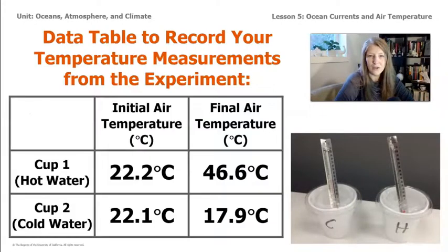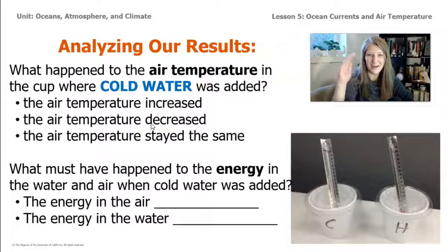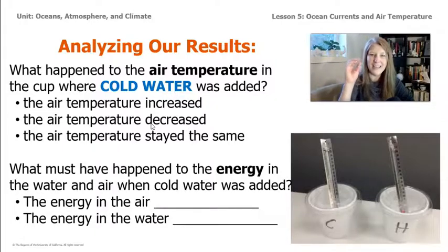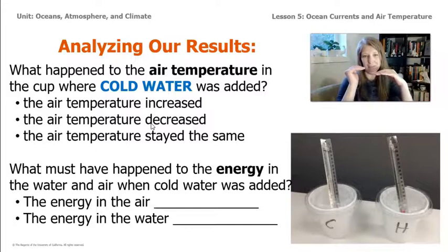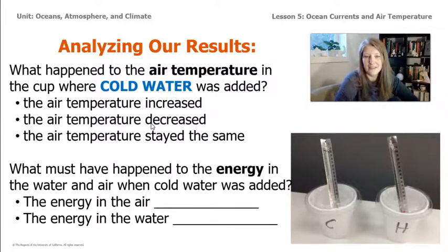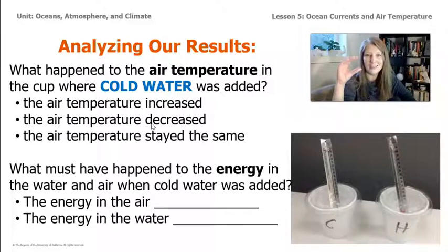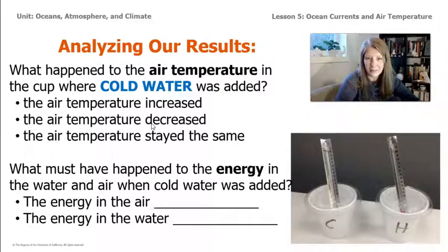The same exact thing is true for the cold water. The cold water cup started at 22.1 degrees and dropped down about 4.2 degrees Celsius to 17.9. The temperature of the air above the cold water decreased by 4 degrees Celsius, so the energy level went down as well — some of the kinetic energy in the air transferred to the cold water. Energy can't be created or destroyed; it can transfer from one object to another but can't just disappear. What we learned from this experiment is that the air above hot or cold water can change temperature. We'll take this evidence and use it to understand how the air temperature of a place might change if a warm or cold ocean current were passing by.